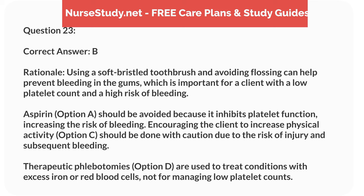Correct answer: B. Rationale: using a soft bristled toothbrush and avoiding flossing can help prevent bleeding in the gums, which is important for a client with a low platelet count and a high risk of bleeding. Aspirin, option A, should be avoided because it inhibits platelet function, increasing the risk of bleeding. Encouraging the client to increase physical activity, option C, should be done with caution due to the risk of injury and subsequent bleeding. Therapeutic phlebotomies, option D, are used to treat conditions with excess iron or red blood cells, not for managing low platelet counts.